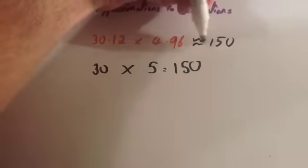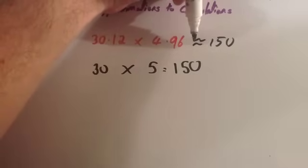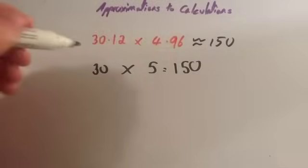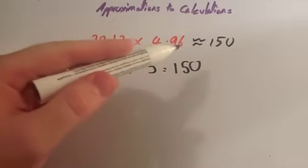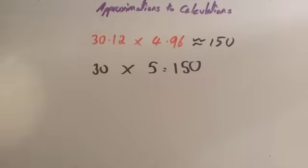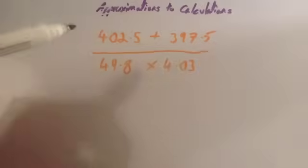Notice I've used squiggly equal sign. This is the approximation symbol, and it just means roughly equal to. So, 30.12 multiplied by 4.96 is roughly equal to 150.